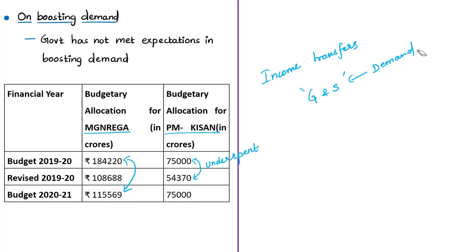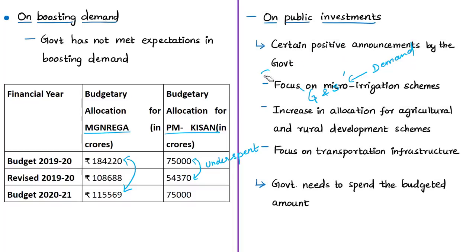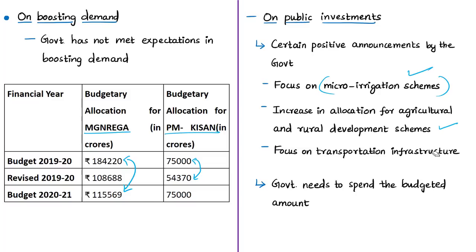The author also notes that health and education allocations are well below expectations. However, the author appreciates certain government announcements, particularly in rural development: micro-irrigation schemes for 100 water-stressed districts and increases in allocations for certain agricultural and rural development schemes. Rural developments like rural roads, cold storage, and logistical chains are crucial for income and employment growth in rural India, as they create demand and have a multiplier effect on rural infrastructure.